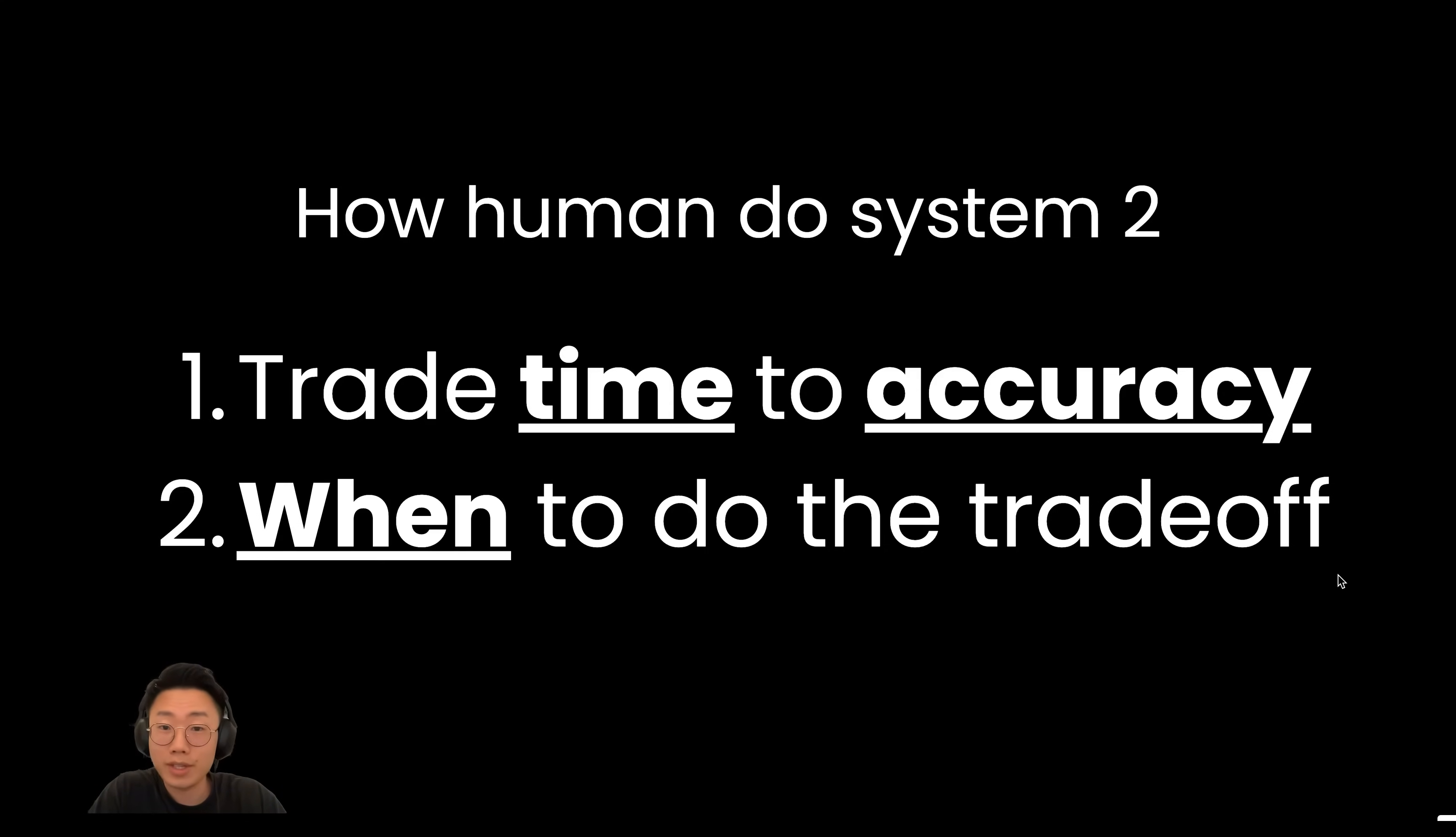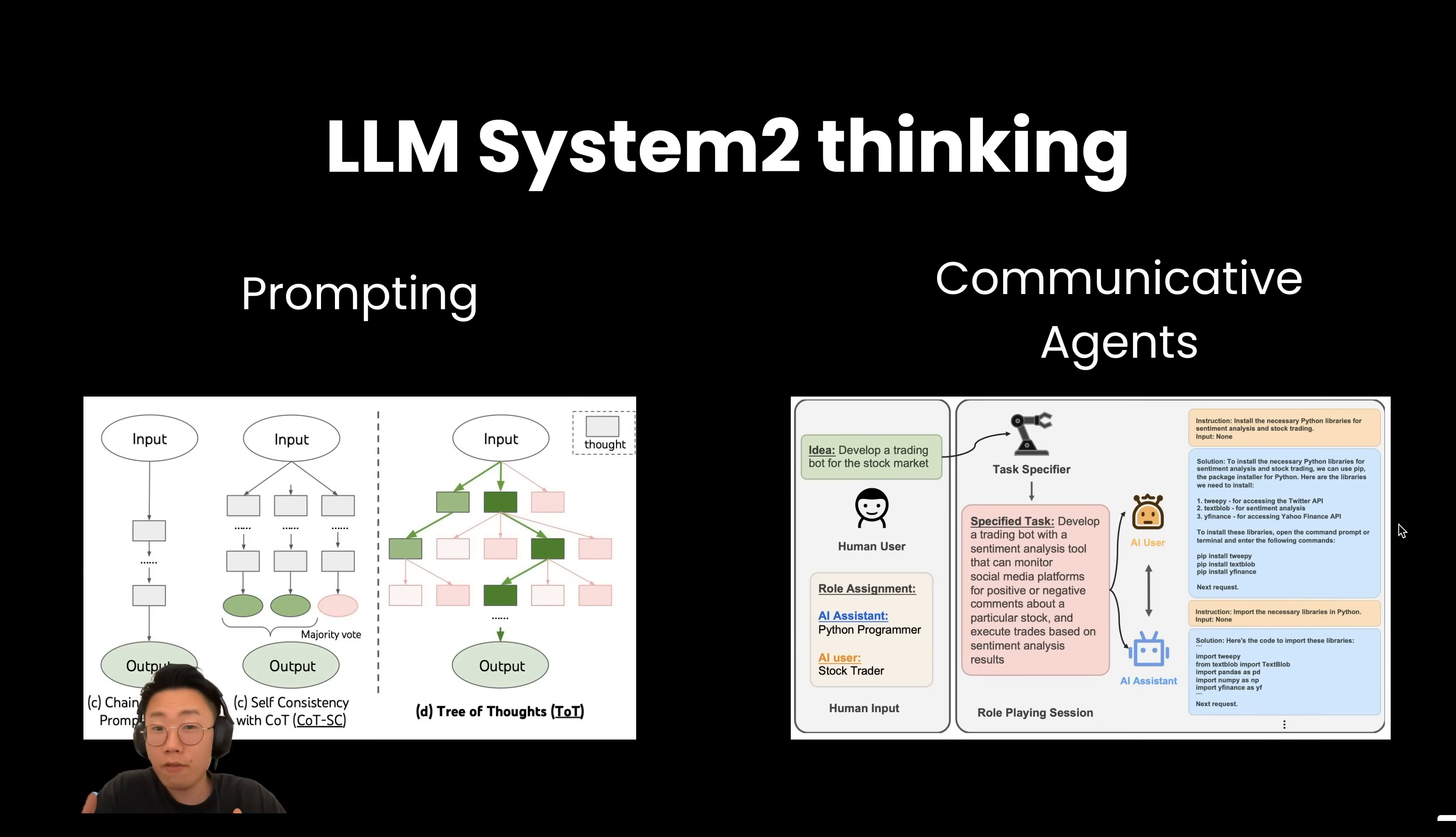So obviously we should see some very big and exciting updates when GPT-5 comes out, especially for those reasoning and system two level thinking. But apart from better models itself, what are the ways that we can do today to enforce large language models to have system two level thinking?